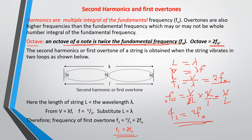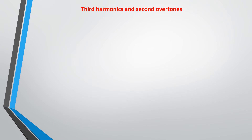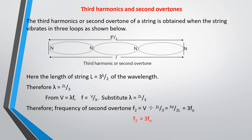For the second overtone, the string vibrates in three loops. When it vibrates in three loops, the length of the string equals 3 over 2 of the wavelength — that is, L equals 3λ/2. Therefore lambda equals 2L over 3.